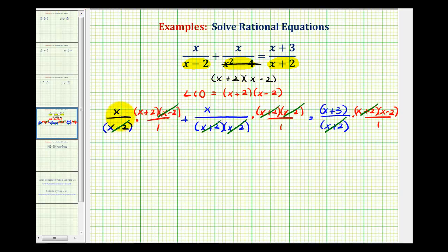Now we'll determine the products. Here we have x times the quantity x plus two, plus here this product is just x. And on the right we have the quantity x plus three, times the quantity x minus two.